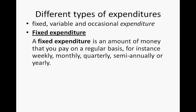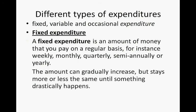You get fixed, variable, and occasional expenditures. A fixed expenditure is an amount of money that you pay on a regular basis — for instance, weekly, monthly, quarterly, semi-annually, or yearly. Quarterly means once every term. Semi-annually means every half a year, every six months. The amount of a fixed expenditure can gradually increase, but it stays more or less the same until something drastic happens, like a change in the economy, the price of electricity, or the fuel price. So, fixed expenditure stays the same or it often changes once yearly.